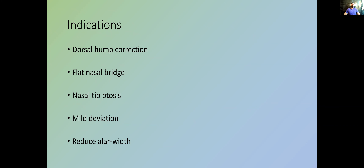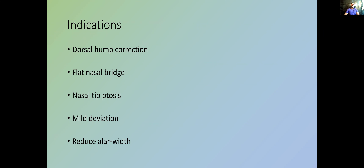The indications for a non-surgical rhinoplasty — the most common is dorsal hump correction, without a shadow of doubt. A flat nasal bridge is very common in people from the Far East — Chinese or Asian patients — who often complain that their glasses fall off because they have no nasal bridge. Nasal tip ptosis, deviated nose, and reduction of the alar width are also indications. You need to know where to draw the line — somebody with severe ptosis or extreme septal deviation may need referral to surgical colleagues.